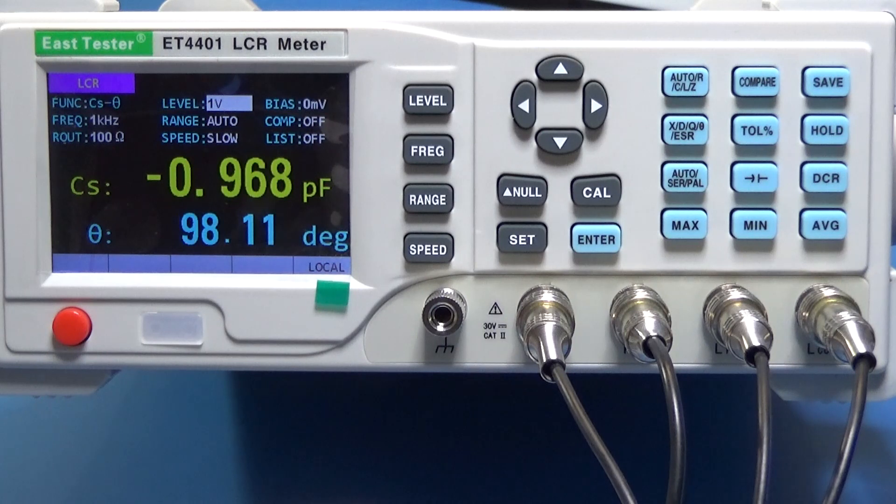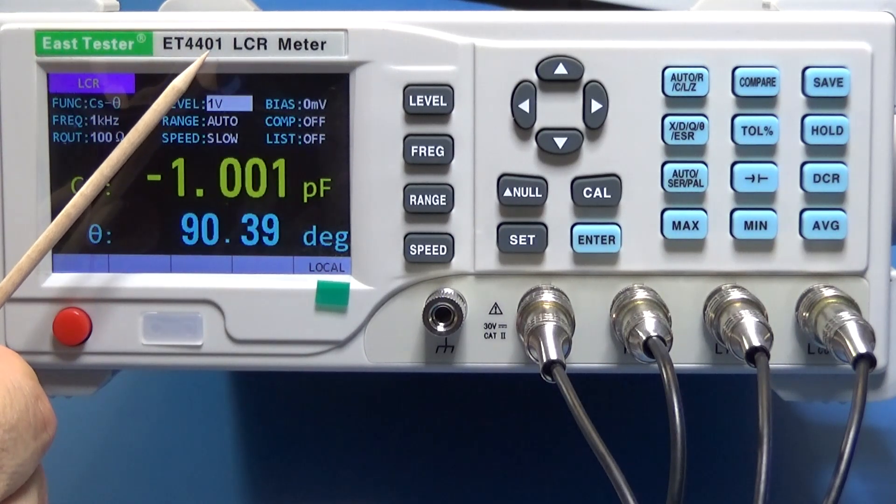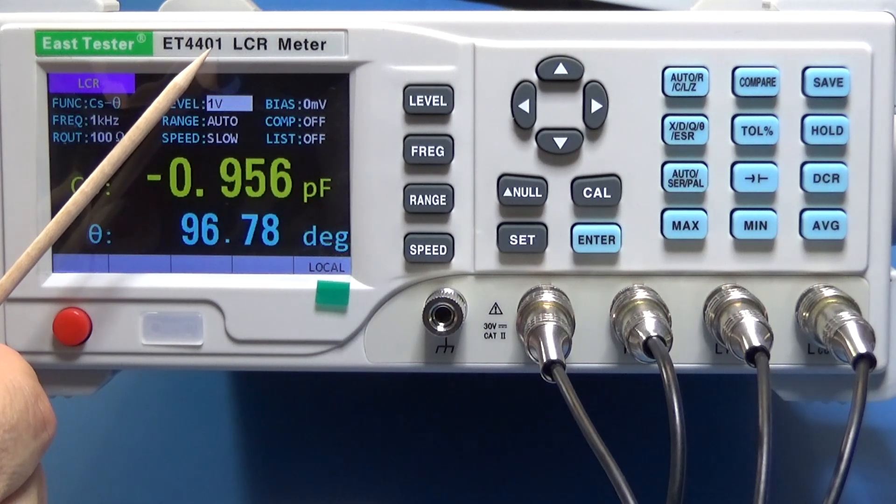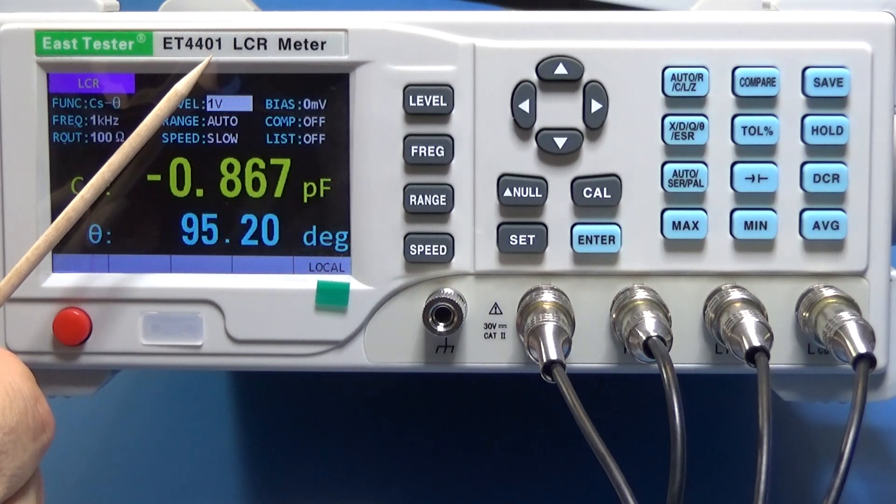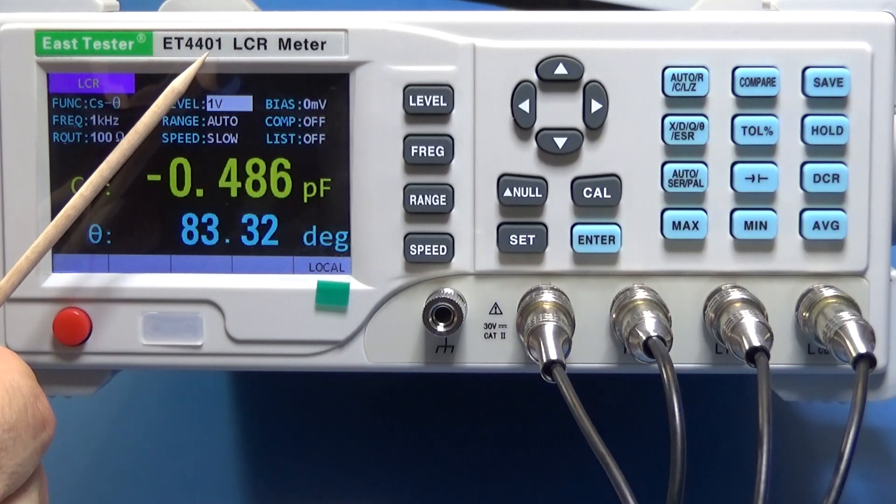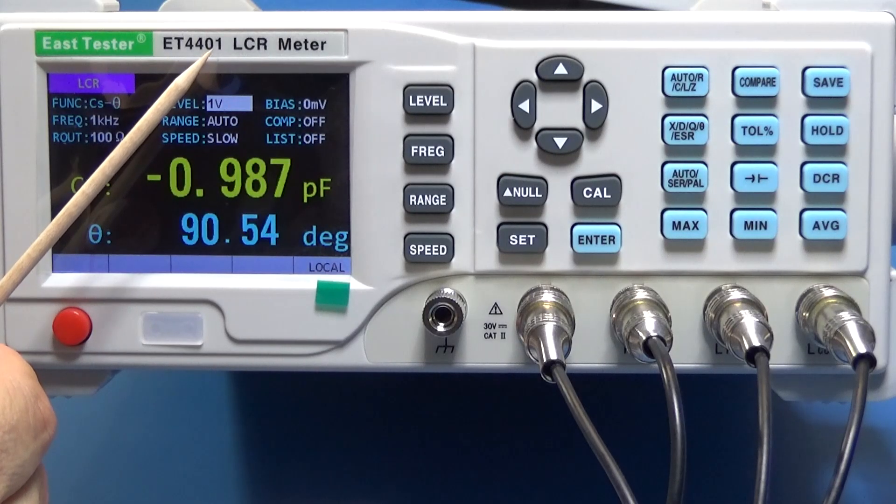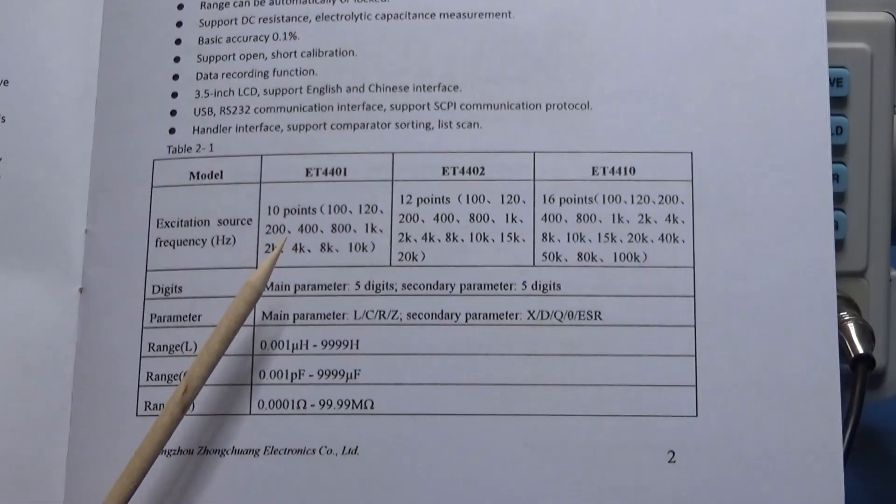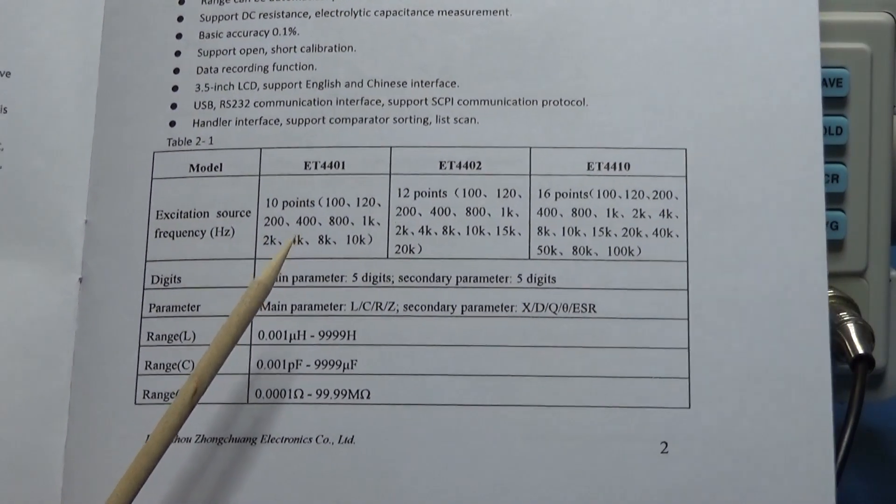The second button is frequency. This model supposedly is the 10 kilohertz model. But for one mistake from the factory, and I am the lucky one, they didn't lock by firmware the device. And I got the 100 kilohertz device even when the firmware says is the one for 10 kilohertz.